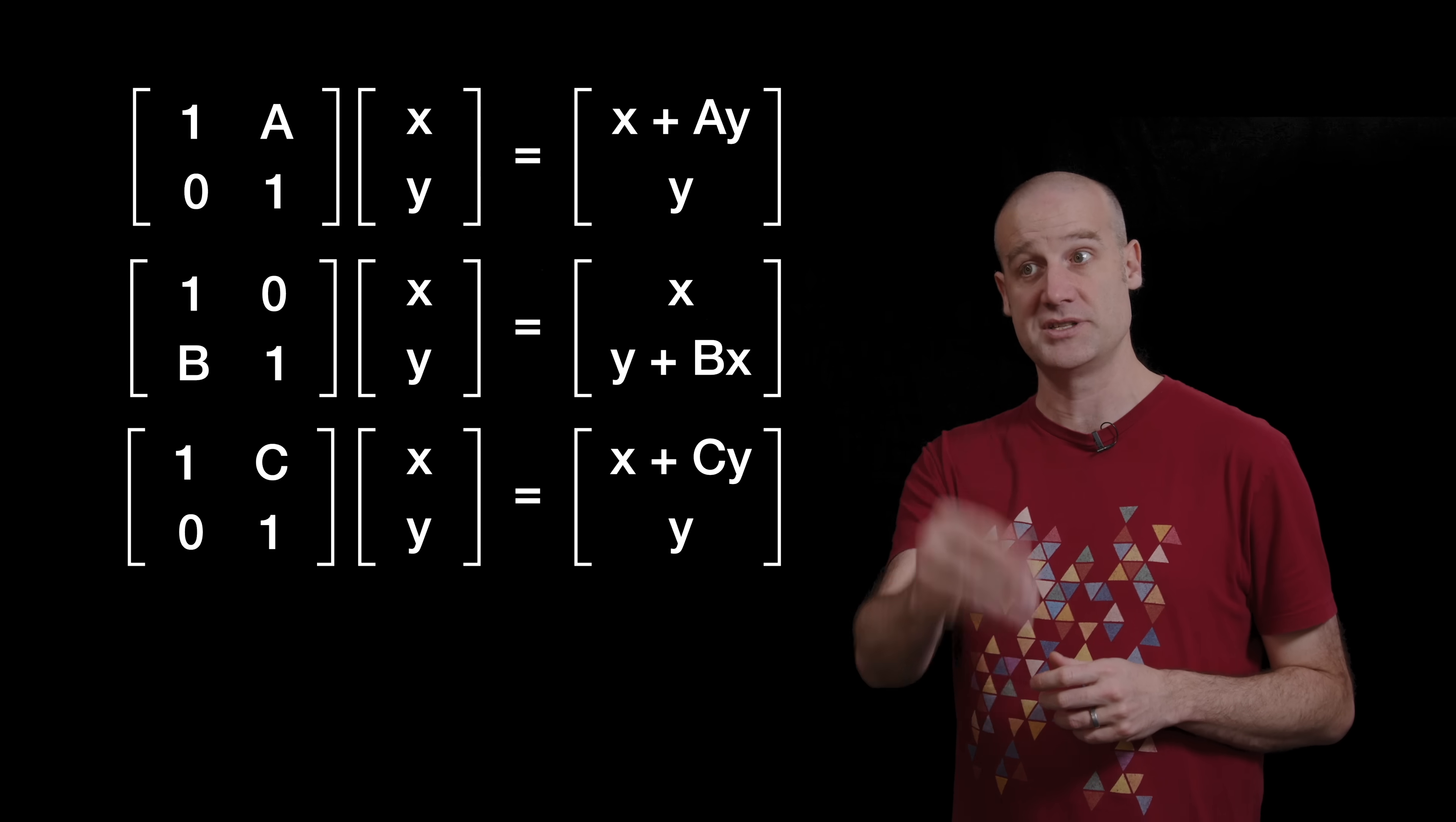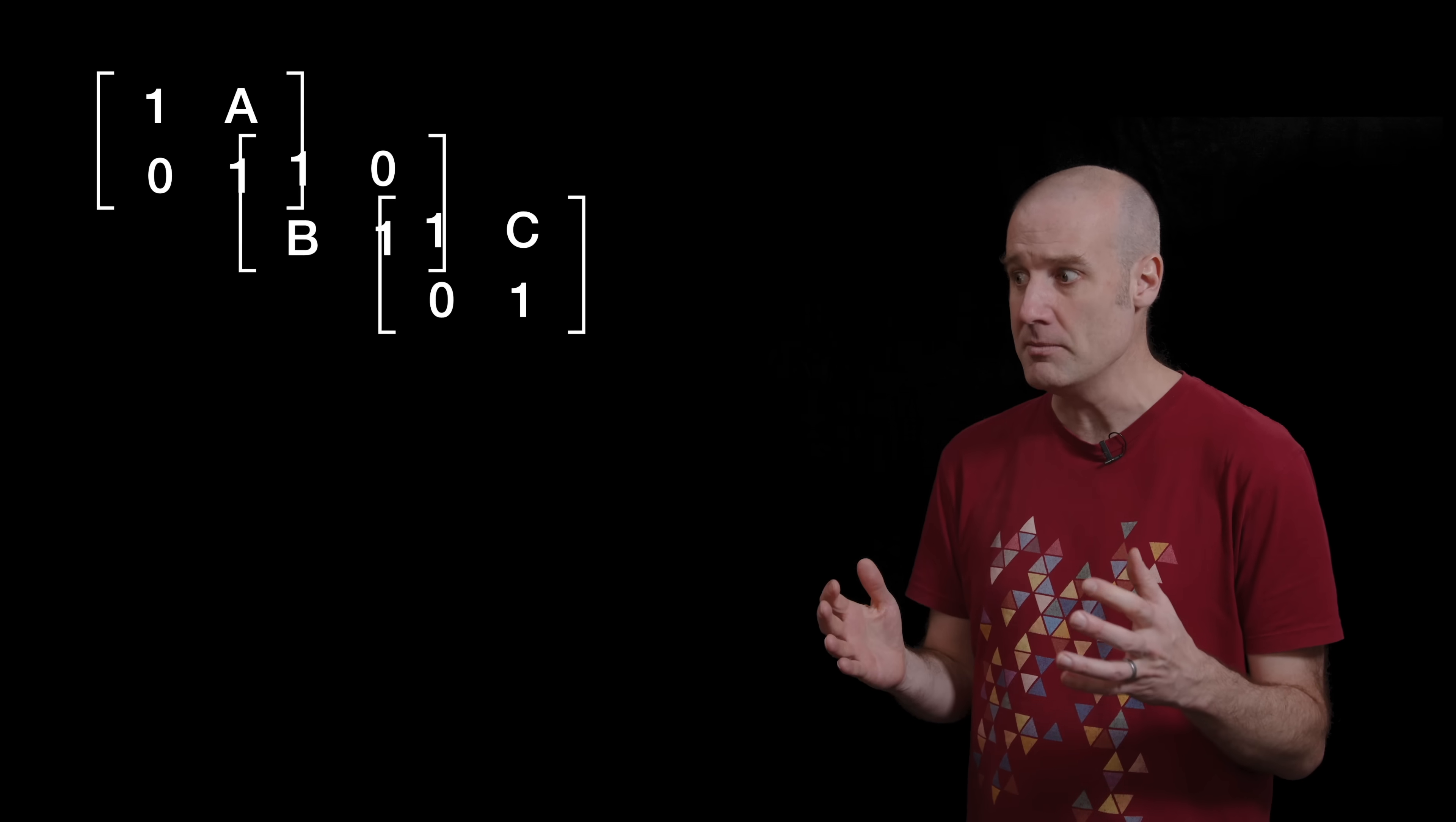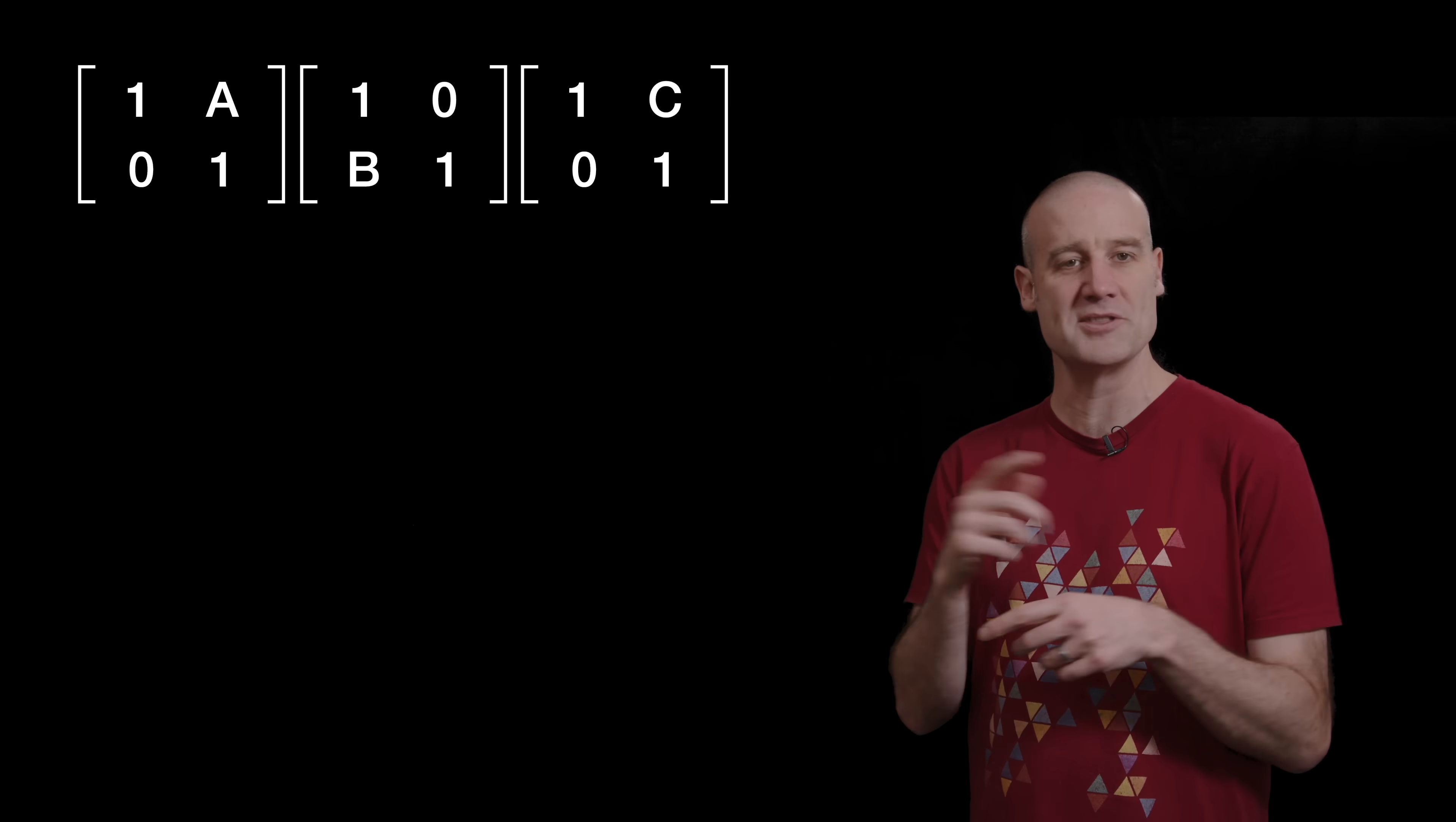There are three matrices which describe the three skew transformations. So doing all three of them, and matrices tricky, multiply them in the right order. None of this is swapping the order anymore. Write that down in your workbooks now.